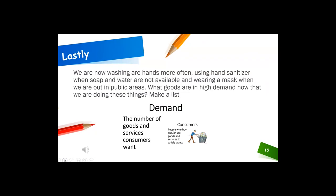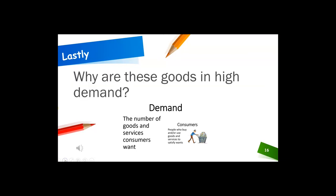Think about what you learned about supply and demand. Let's apply it to the real world. We are now washing our hands more often, using hand sanitizer when soap and water are not available, and wearing a mask when we are out in public areas. What goods are in high demand now that we are doing these things? Make a list. Shout out one of the things off your list to me. Think about why these things are in high demand. Think about the word supply — why are these goods in high demand?